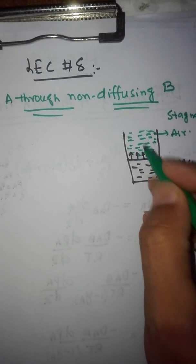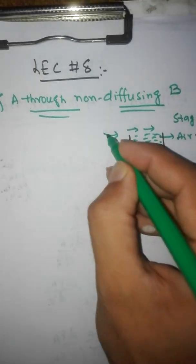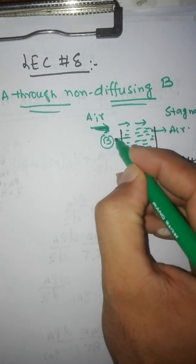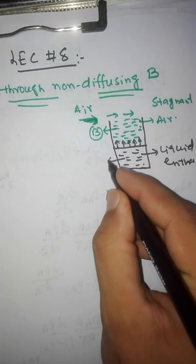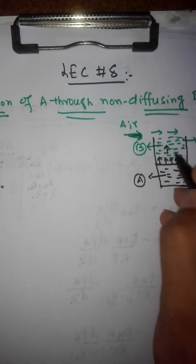Only ethanol was evaporating and passing through the air. There was air flowing on the top. Air is component B and ethanol is component A. So component A was passing through component B.